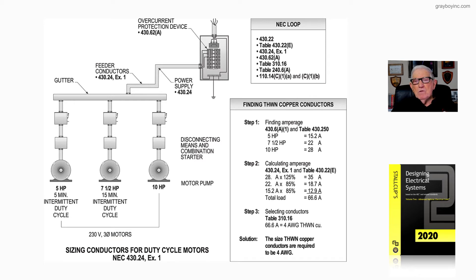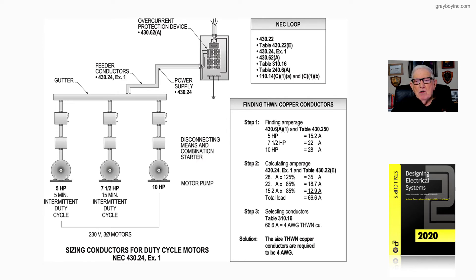In Step 2, we apply NEC 430.24 along with the exception and Table 430.22(E). The 28-amp 10-horsepower motor has no duty cycle, so it goes to 125%, giving 35 amps. The 22-amp motor at intermediate duty is reduced to 85%, giving 18.7 amps. The 15.2-amp motor at 85% intermediate duty gives 12.9 amps. Totaling everything comes to 66.6 amps.